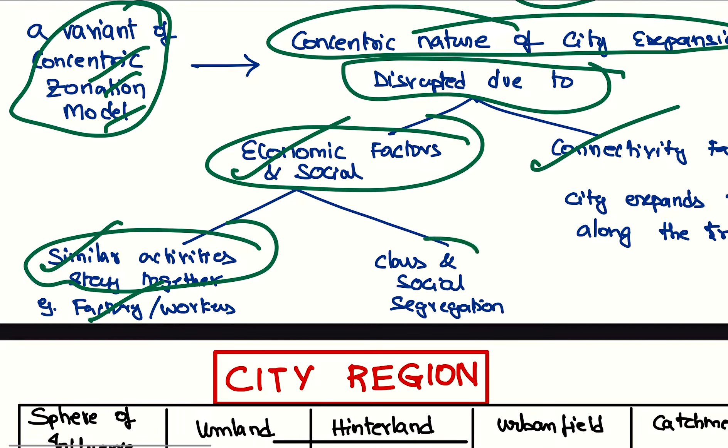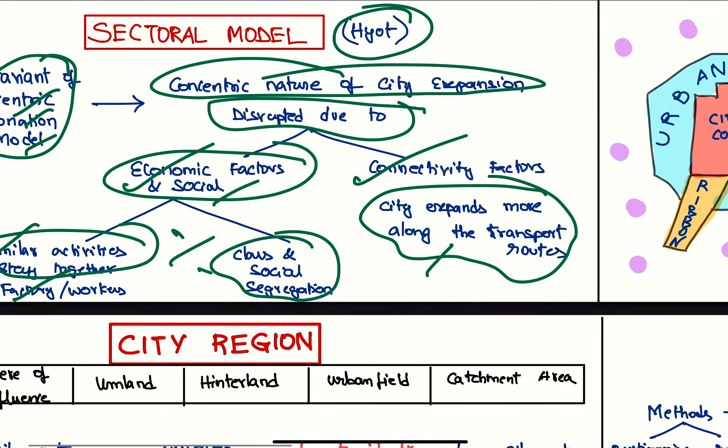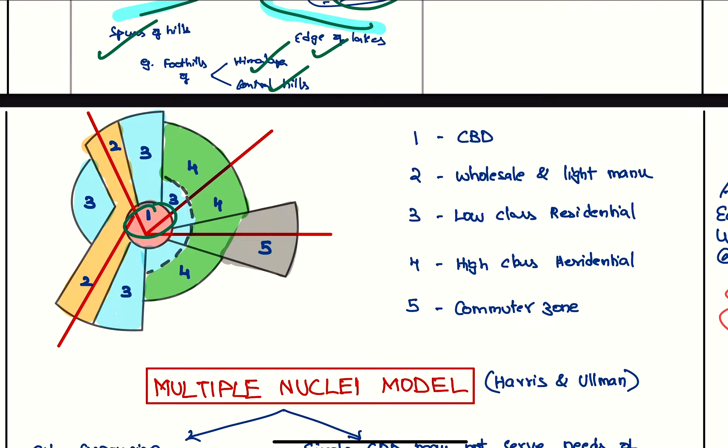Also, class and social segregation - rich and poor separate. Second factor is connectivity - the transport routes also disrupt the city's expansion concentric model. Here we can see this is the CBD and it is not perfectly concentric, it is disrupted. This is the wholesale and light manufacturing. The lower class and workers live nearby the working places, and high class people move far away because they want big houses and they don't want any crowding. There will be a commuter zone because rent will be very low and because of the development of modern transport systems.